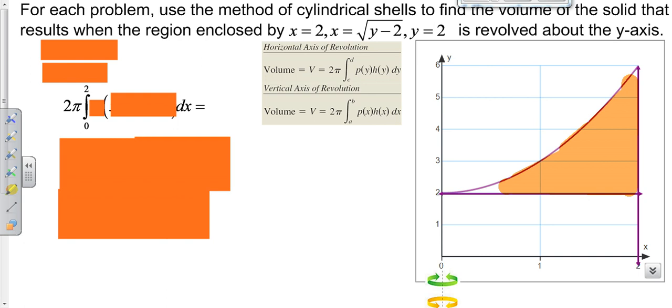Then we need to find our radius. Our radius goes from a point here, which is x units over, minus the axis of revolution, which is on the left at 0. So x minus 0, which is x for our radius.